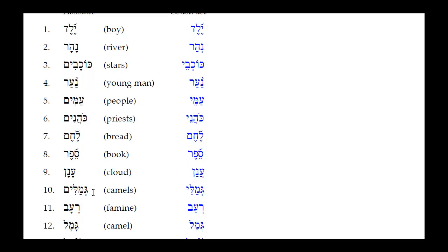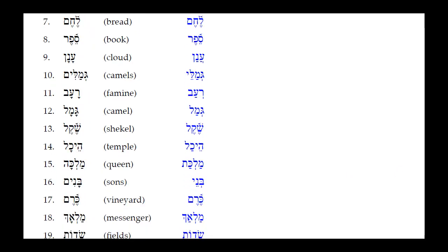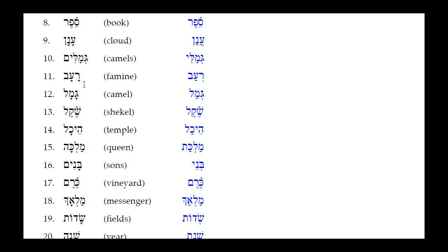Number nine: Gemalim — camels. The Hirik Yod Mem Sofit drops off and a Seri Yod takes its place; everything else remains the same. Result: Gemalei. Number ten: Ra'av — famine. The Kamets under the Alef (closed unaccented syllable) reduces to a Patak, and the Kamets under the Resh (open unaccented syllable) reduces to a simple Sheva. Note that Resh is a semi-guttural — it rejects doubling but does take a vocal simple Sheva, unlike other gutturals that require a Hatef. Result: Ra'av.